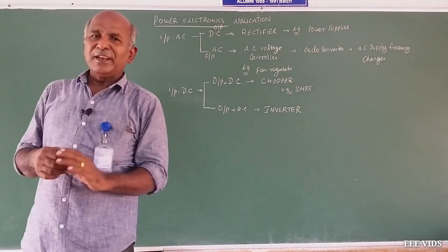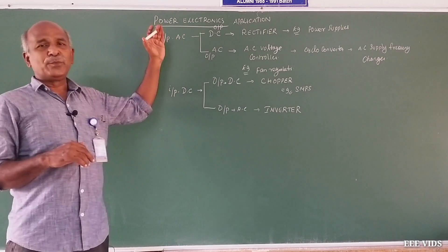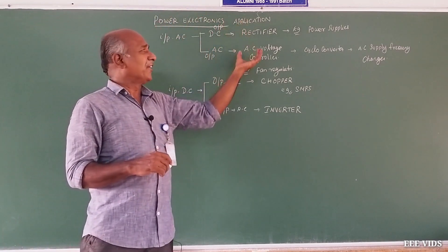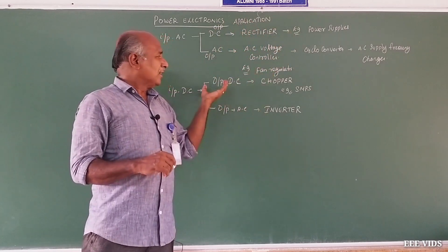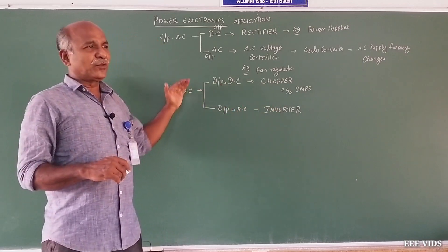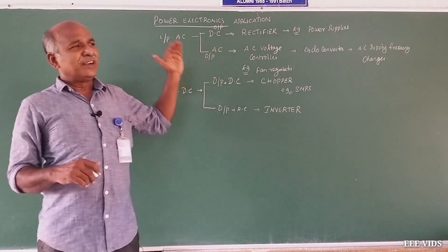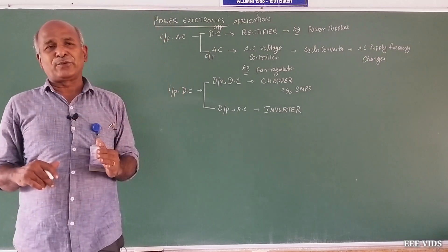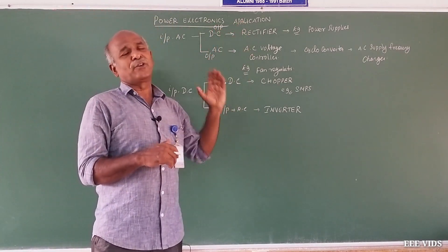So, these are the main applications in power electronics circuits based on input and output type: rectifier circuits, AC voltage controller, cyclo-converter, DC chopper, and AC inverter. DC input to AC output, DC input to DC output, AC input to AC output, and AC input to DC output — these are all different applications we can use in power electronics circuits.